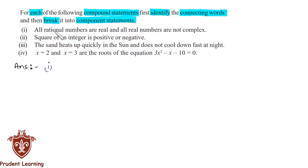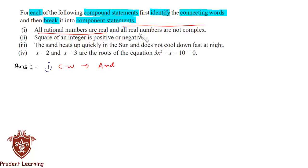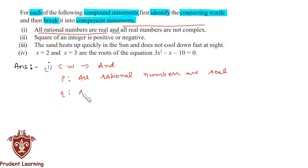In the first section, the given compound statement is: 'All rational numbers are real and all real numbers are not complex.' The connecting word is 'and'. The first component statement P is: 'All rational numbers are real,' and the second component statement Q is: 'All real numbers are not complex.'